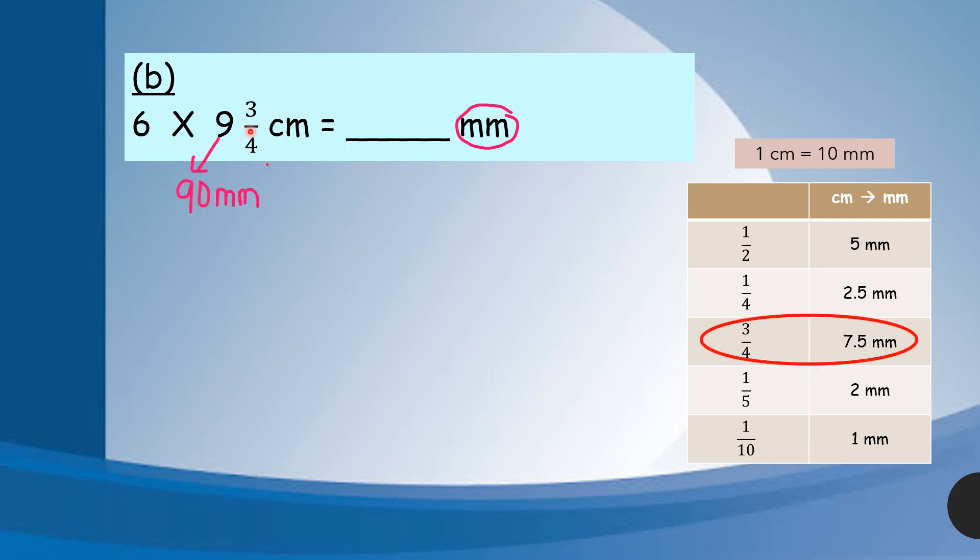This 9 is 9 cm. When I convert to mm, I need to times 10. 9 times 10 is 90 mm. After that, 3 over 4 cm - we refer to the table. 3 over 4 cm when converted to mm is 7.5 mm. After that, we add up: 90 plus 7.5, so we will get 97.5 mm.